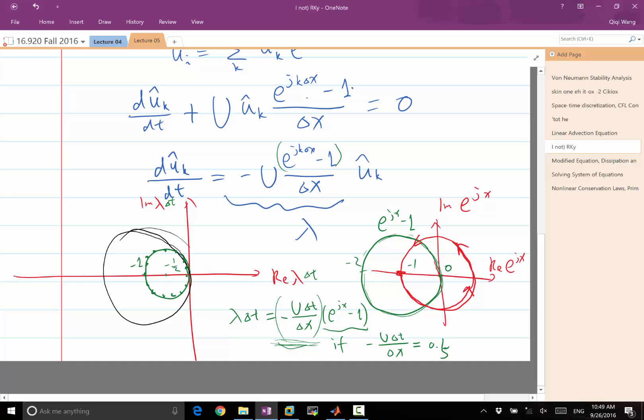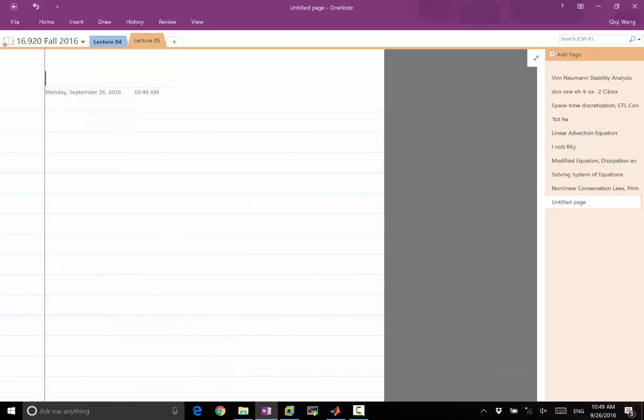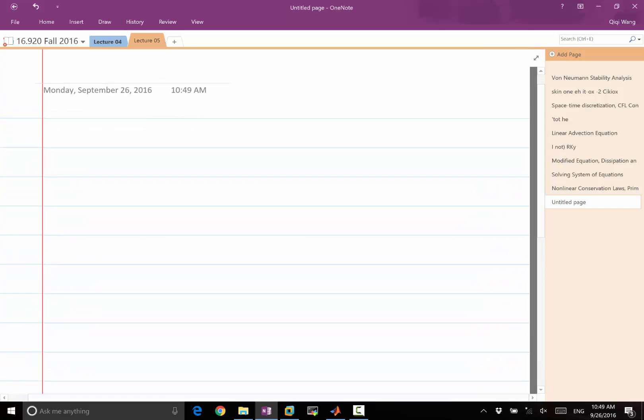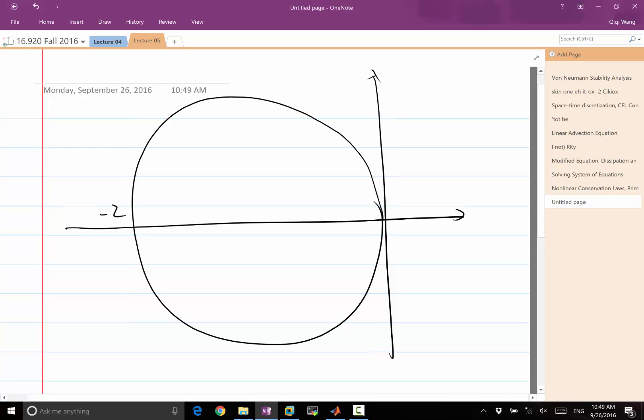That's a very good question. If there are two cases where the scheme is unstable, one case is if u delta t over delta x is positive, which means when I take a minus sign, it's negative. What is the effect of multiplying the green circle by a negative number? What does it show up in the complex plane? It flips into the right half of the complex plane. So let's add a page.